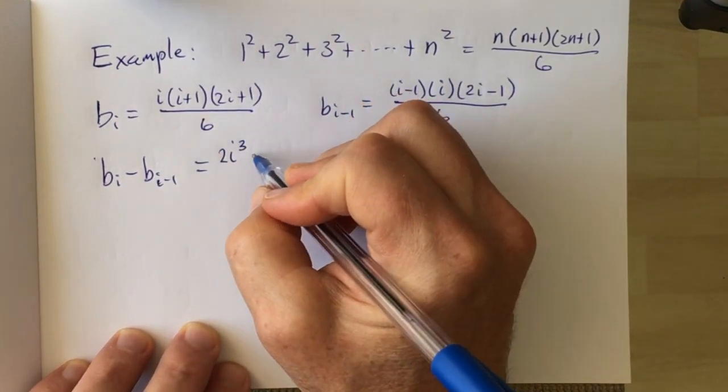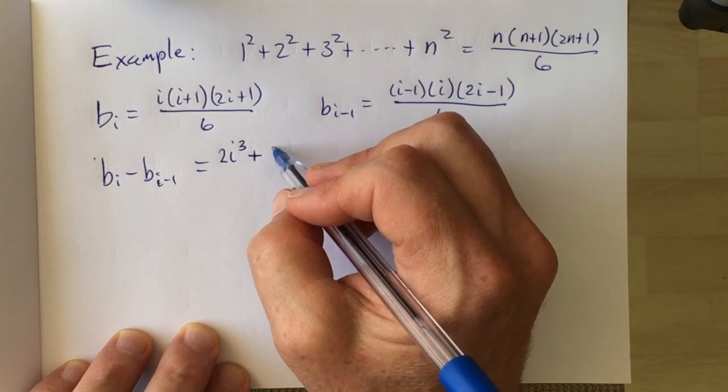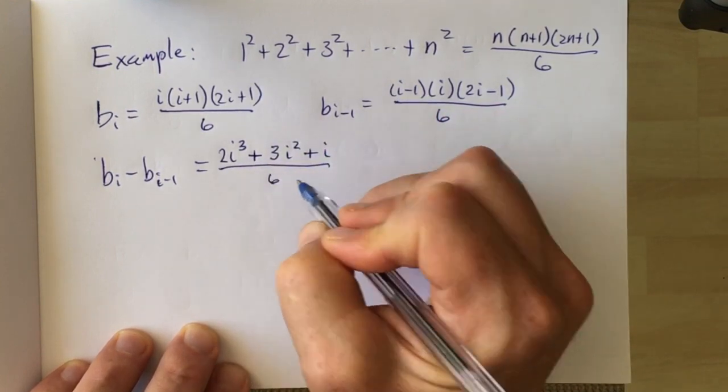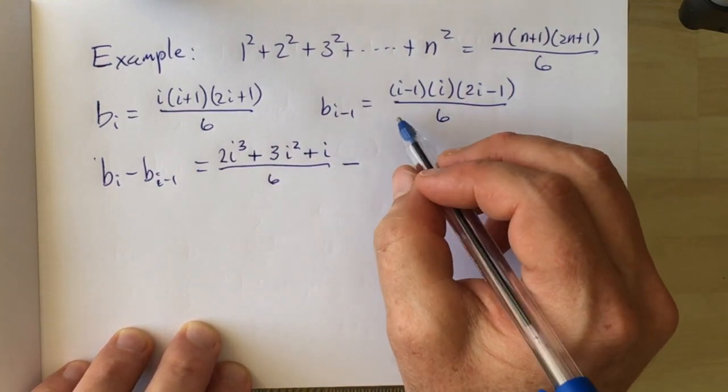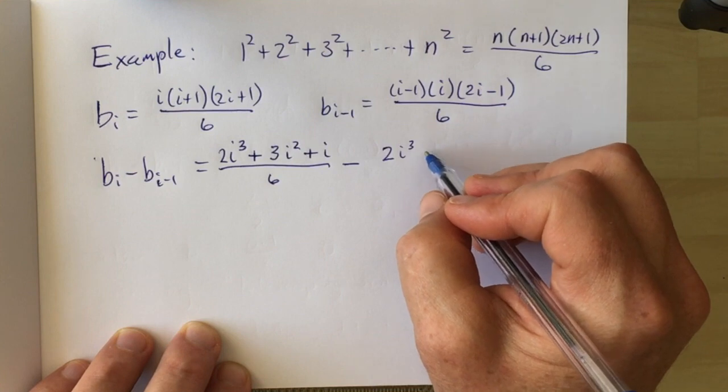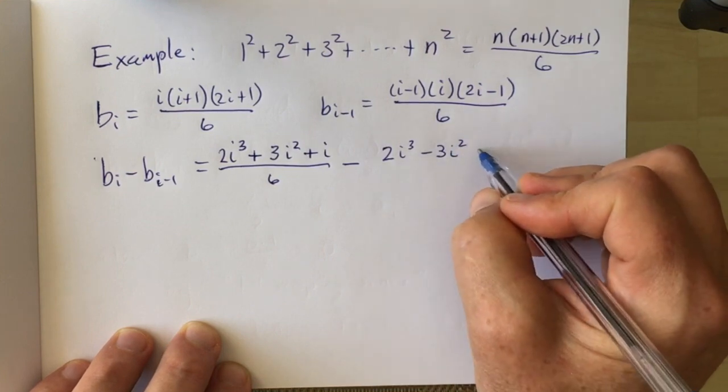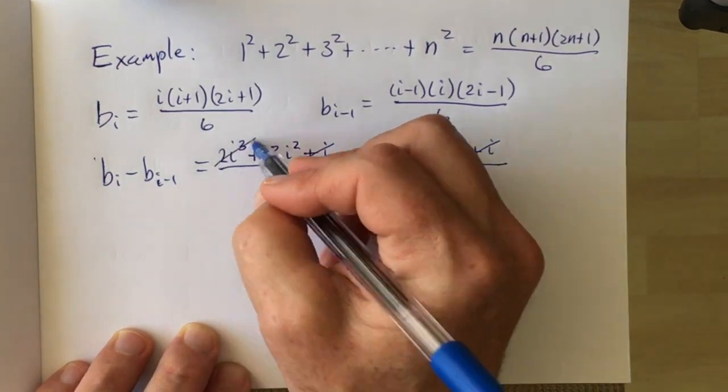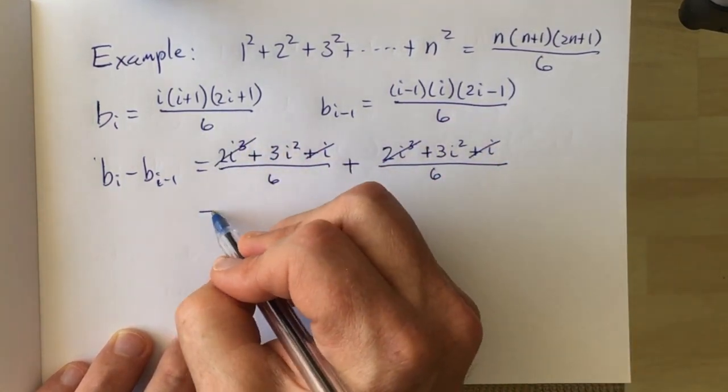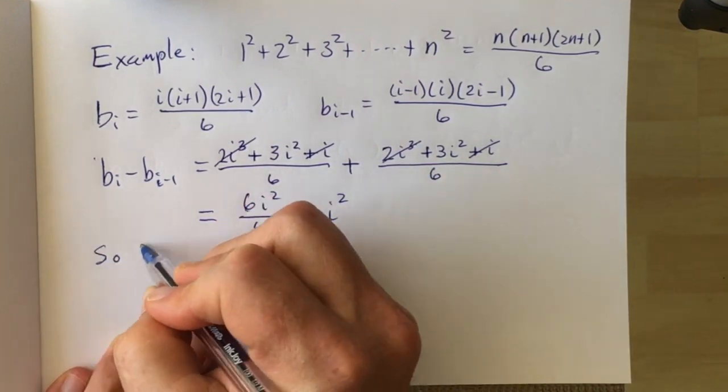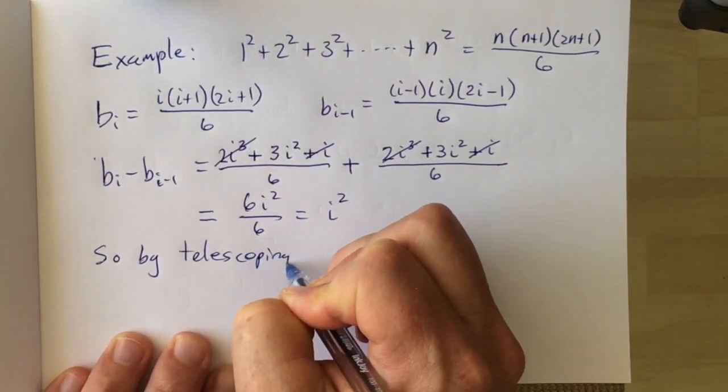Now, when we compute bi, we expand the numerator and see that it's a polynomial of degree 3. It's got three terms. And we expand the numerator of bi minus 1, and it also has three terms. And amazingly, four of the terms cancel in that sum, and we're left with just 6i squared over 6. And that's equal to i squared,